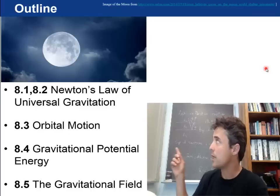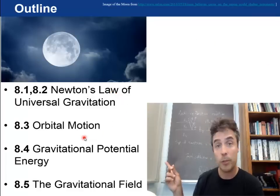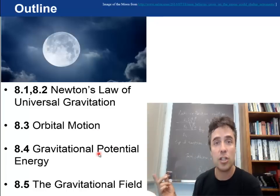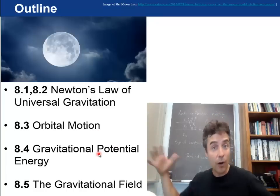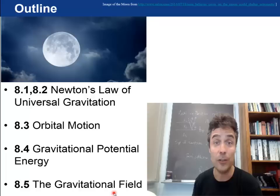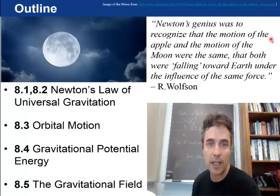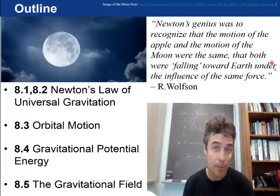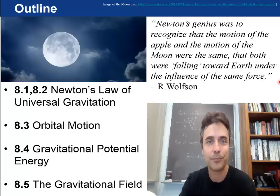The first two sections are just introducing Newton's law of universal gravitation. Next we have orbital motion, talk about satellites. Next is gravitational potential energy, now generalized to the case where you're far away from a planet. And lastly, a gravitational field. Today's quote of the day is that Newton's genius was to recognize that the motion of the apple and the motion of the moon were the same, but both were falling toward earth under the influence of the same force.